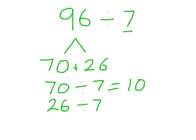Well, 7 times 3 is 21, so that's 3 remainder 5, leaving me with 13 remainder 5.